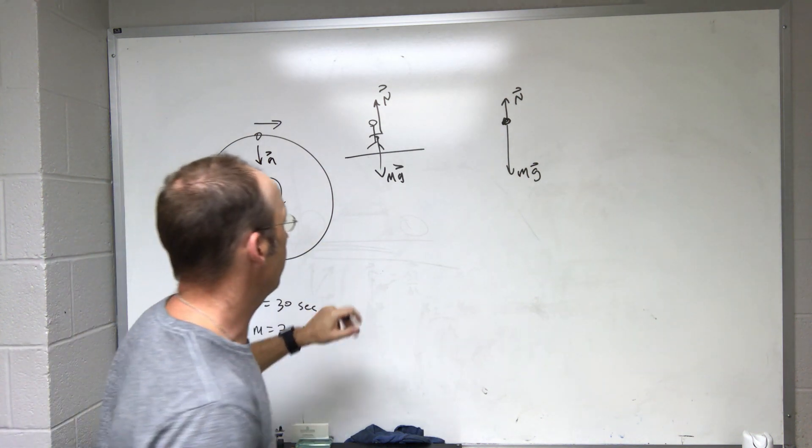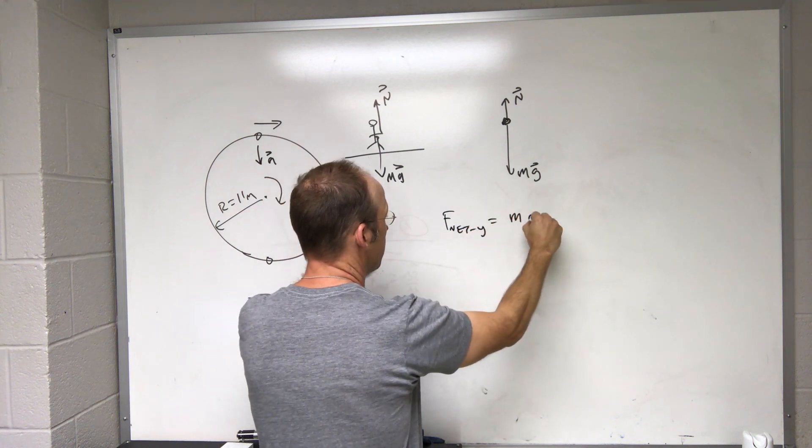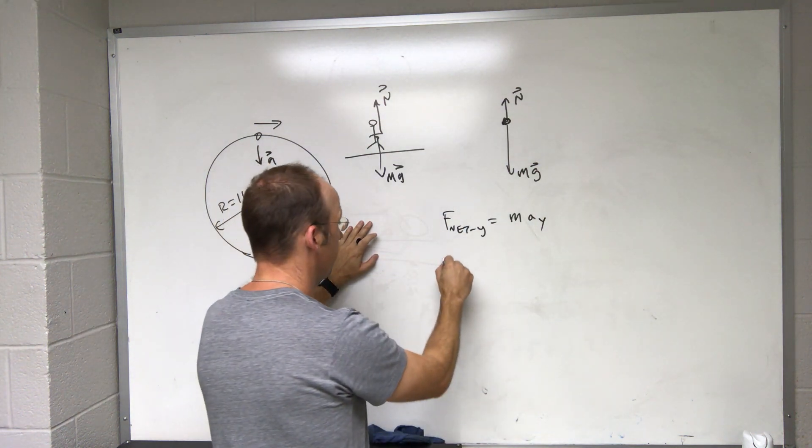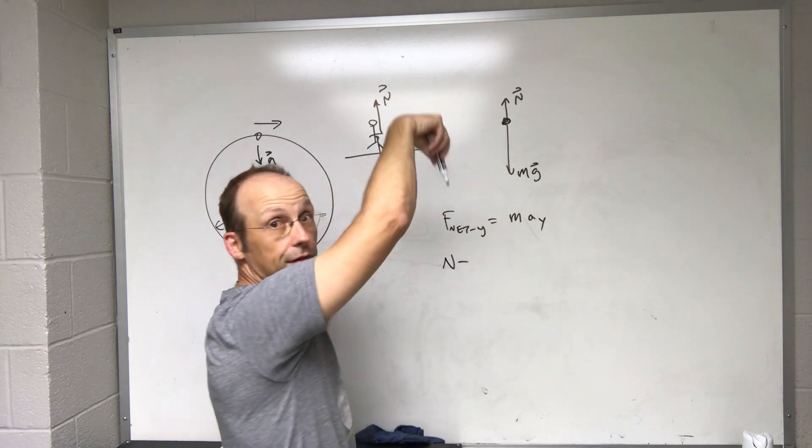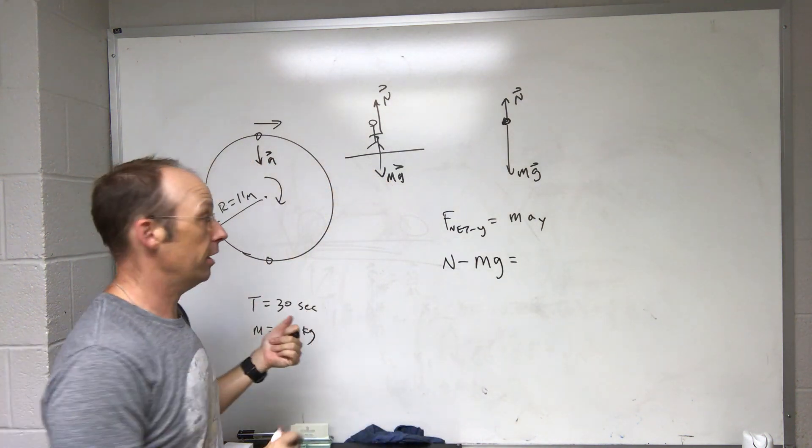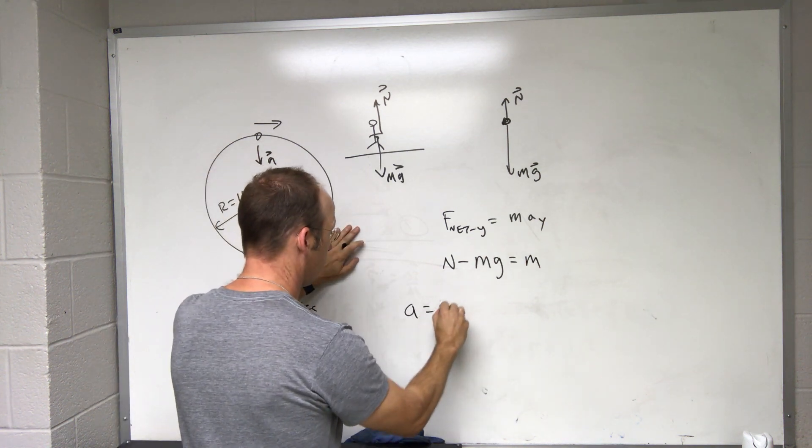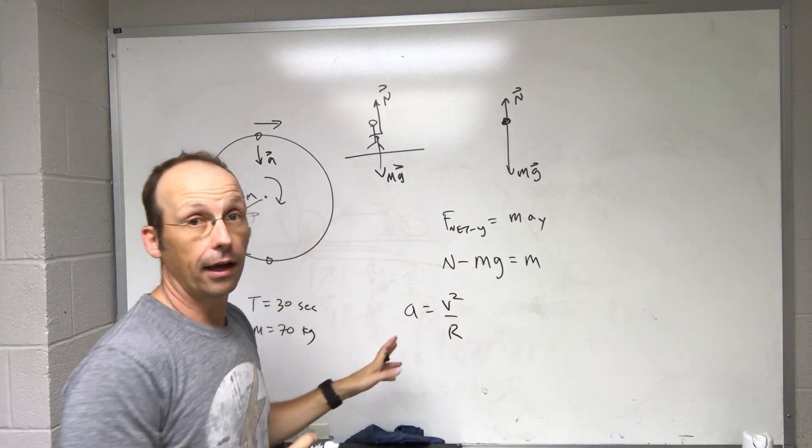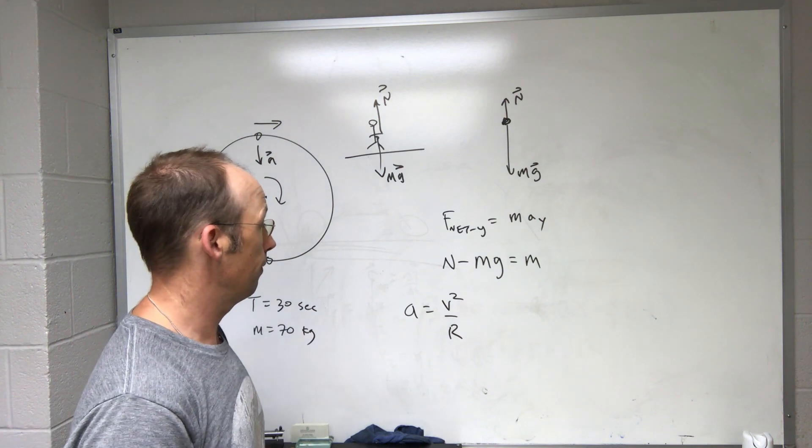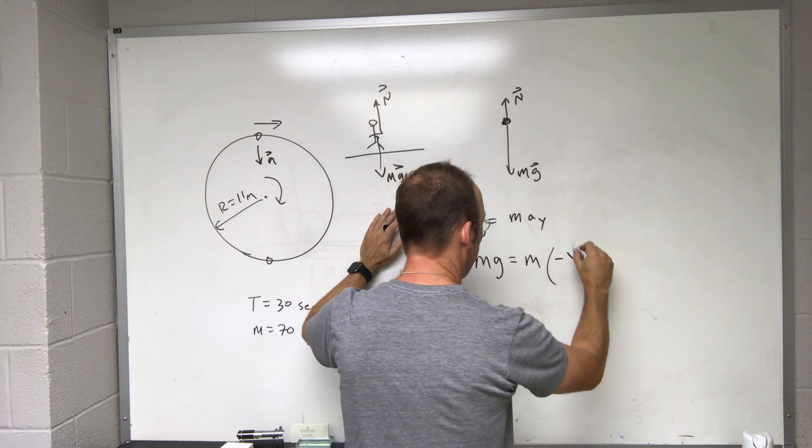The direction of that acceleration is towards the center of the circle. So if I'm up here, I'm actually accelerating towards the center of the circle. So that means if I write this, my F_net in the y direction equals mass times acceleration in the y direction. What forces are in the y direction? I have the normal force, n. I have the gravitational force in the negative y direction, minus mg. That's going to be mass times acceleration. The acceleration of an object moving in a circle is v² over r. In this case, it's in the negative y direction. So this is going to be negative v² over r.